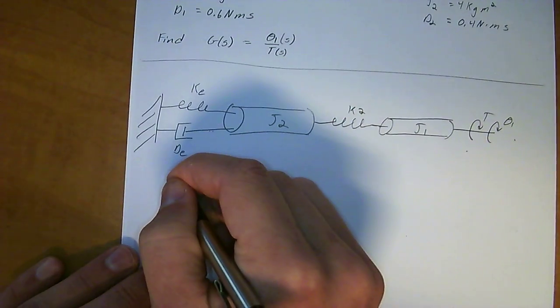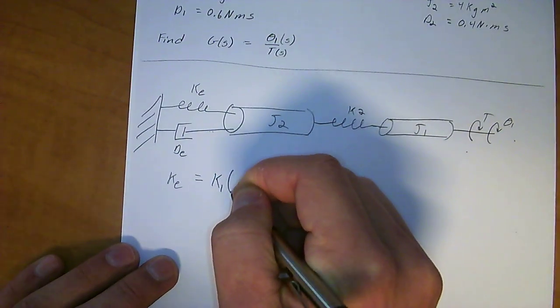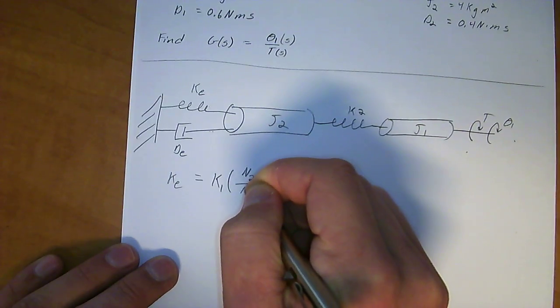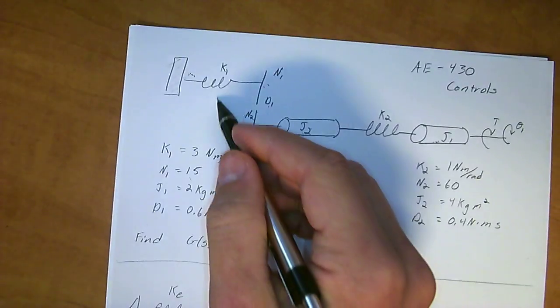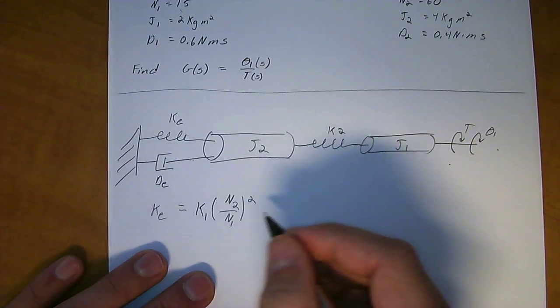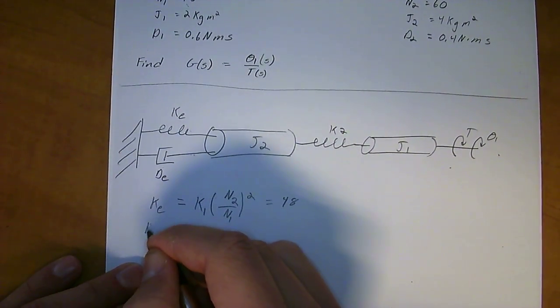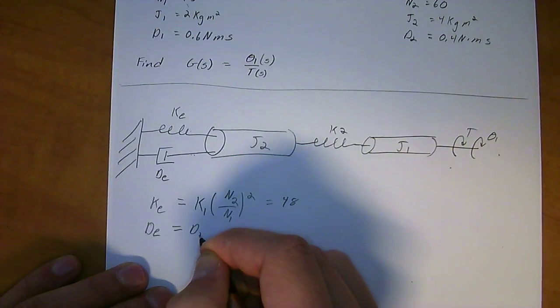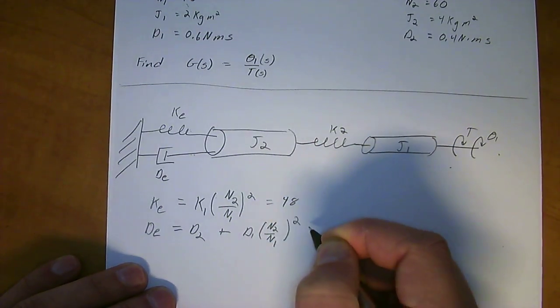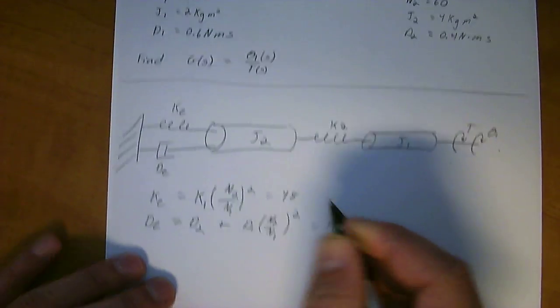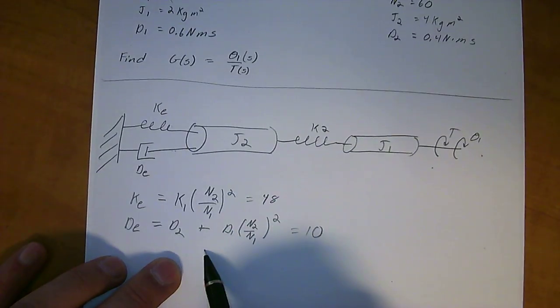In solving for K-equivalent and D-equivalent, the K-equivalent is equal to the original spring times the gear ratio, which is destination N2 over N1 over source squared. Because we are moving an impedance through the gear system. So whenever you are moving an impedance, you square the gear ratio. And if you solve that out, that is going to be equal to 48. And then the damping equivalent ratio will be D2 plus D1 times destination over source again squared, because again, that is an impedance. That is going to be equal to 10. D2 doesn't get transferred through a gear, so you just add it to D1 that is induced by the gear ratio.